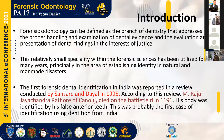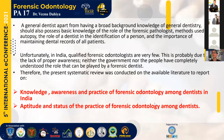This relatively small speciality within forensic science has been utilized for many years, especially in establishing identity in natural and man-made disasters. The first forensic dental identification in India was reported in a review by Sensor and Dayal in 1995, according to which Raja Jachandra died on the battlefield in 1191 and the body was identified by his false anterior teeth — probably the first case of identification using dentition from India.